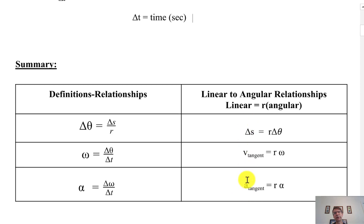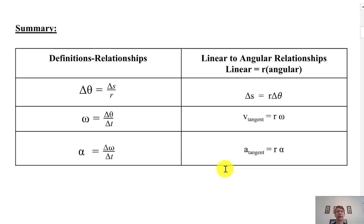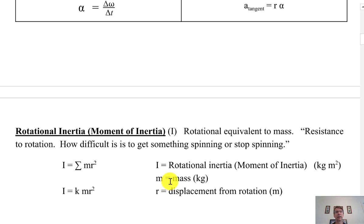On the left side of these equations is the linear situation: arc length in meters, v_tangential in meters per second, a_tangential in meters per second squared — just like 9.8 m/s² for gravity. All you do is take the radius of whatever circle you're in and multiply by the rotational concept to get the linear concept. We'll use these equations quite often, especially the last two.